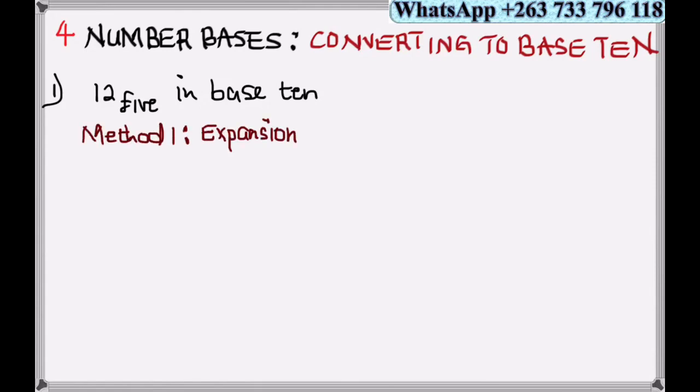Method 1: Expansion, as highlighted in the second lesson. I'll put my place values here: 0, then 1. Therefore, expand 1 times 5 to the power 1 plus 2 times 5 to the power 0. This gives 5 plus 2.